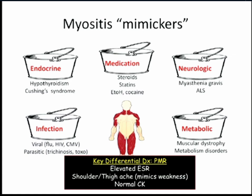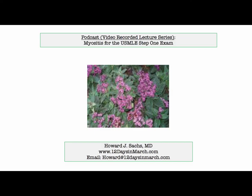PMR presents with high sed rate and shoulder and thigh ache. People with PMR say they're weak, but on examination they're not truly weak — it just hurts. And those patients have normal CKs. So you'll have no problem making the distinction. That's it for myositis — that's plenty. That concludes this discussion of myositis for the USMLE Step 1 exam.